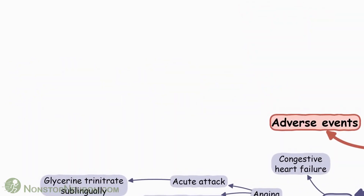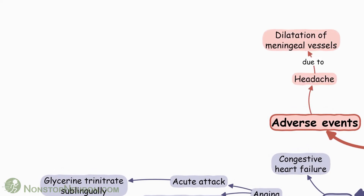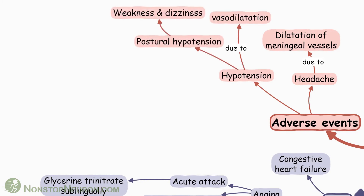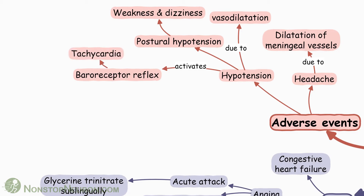Now let's see adverse events with nitrates. A common adverse event is headache, due to dilatation of meningeal vessels. Next is hypotension due to vasodilatation — postural hypotension leading to weakness and dizziness can occur. High doses of nitrates can cause excessive hypotension, leading to activation of the baroreceptor reflex, which causes tachycardia that can worsen angina.